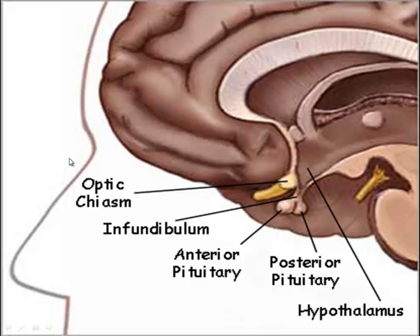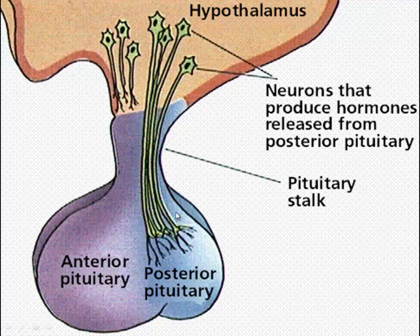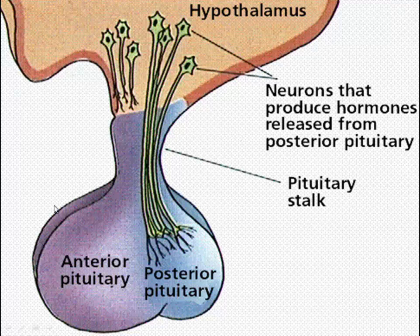The pituitary gland is a complex organ of the human body which is the source of chemicals that play a key role in many functions. It is divided into two separate lobes: the anterior lobe and the posterior lobe. The anterior lobe is connected to the hypothalamus by portal blood vessels only a few millimeters long, through which pass regulating hormones produced in the hypothalamus. These releasing or inhibiting hormones regulate the anterior lobe to initiate the production or suppression of specific hormones.